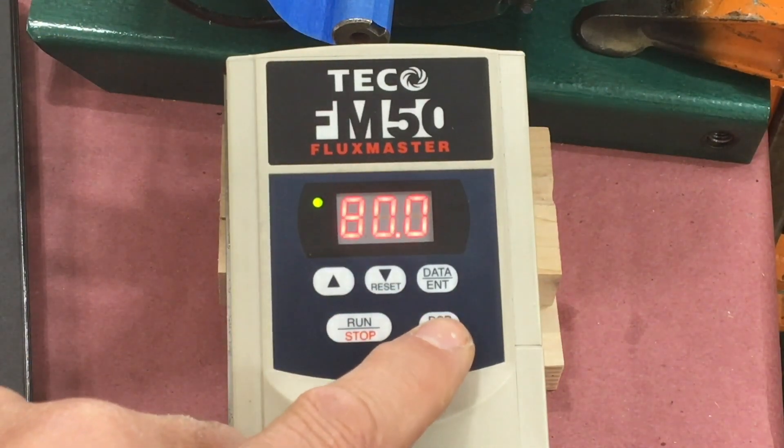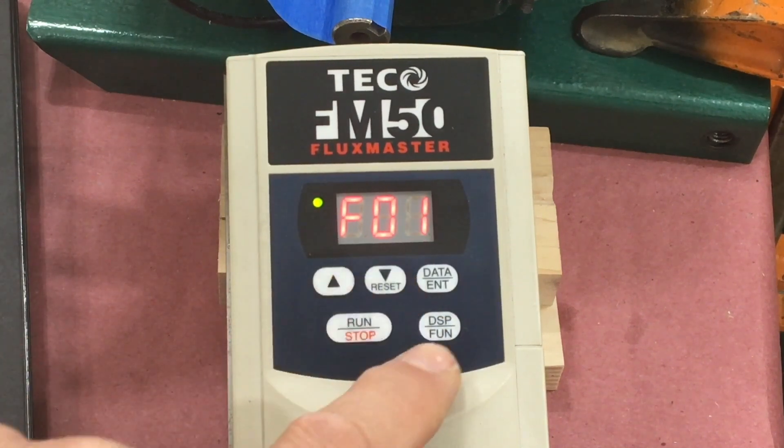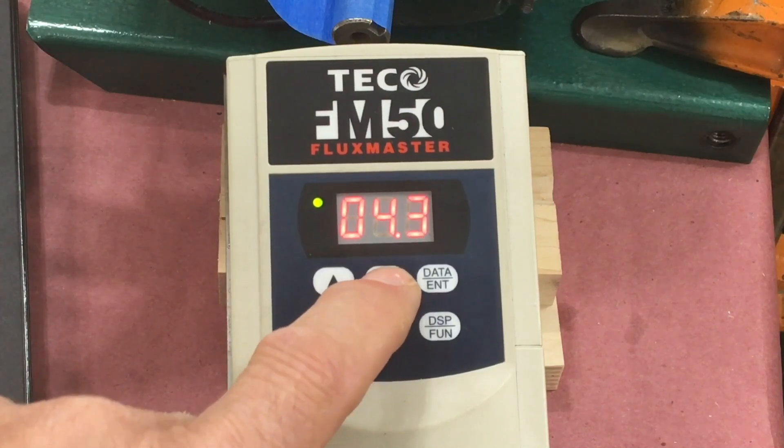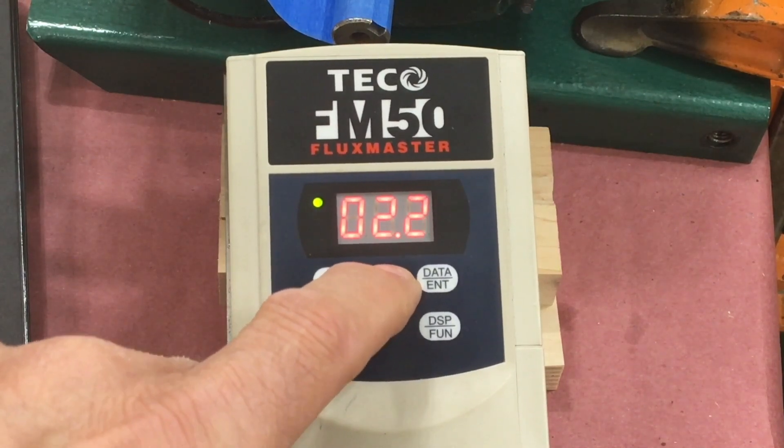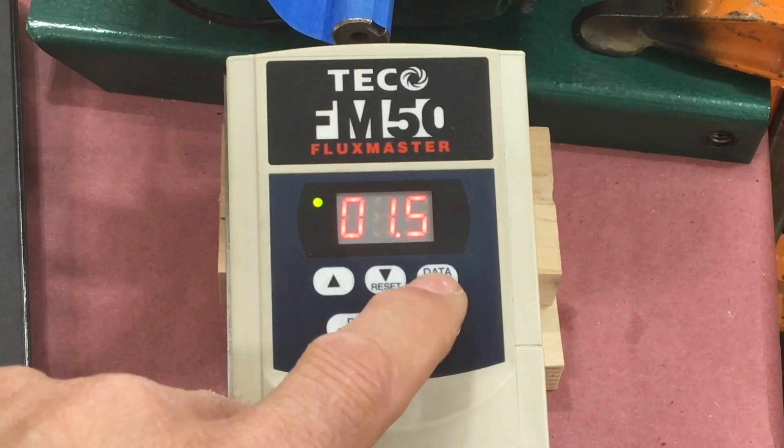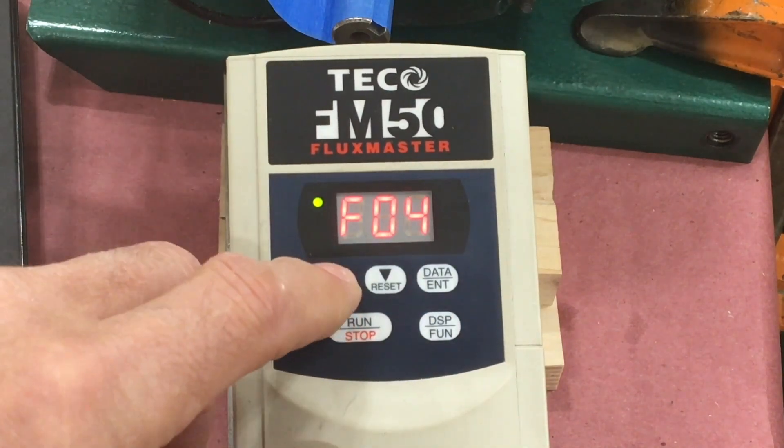These settings are all changed right on the keypad. Function 01 is five seconds for acceleration. Well, we're going to change that to a second and a half. And I'm going to change all the other settings, but I'm not going to bore you with watching me click all the buttons here. Well, maybe I'll bore you just a little bit.